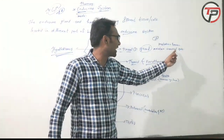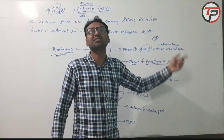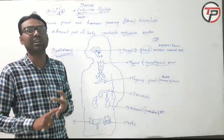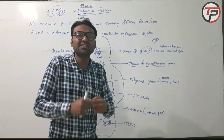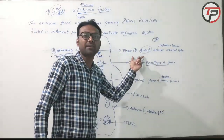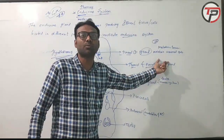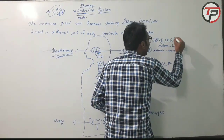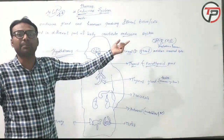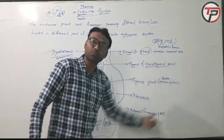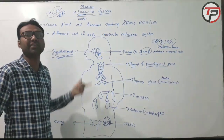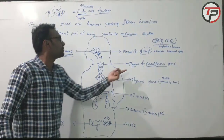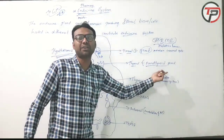For example, the pineal gland secretes melatonin and it maintains the seasonal cycle. The thyroid gland maintains the basic metabolic rate of our body — that is BMR, the basic metabolic rate.